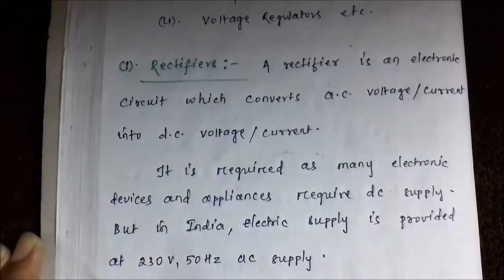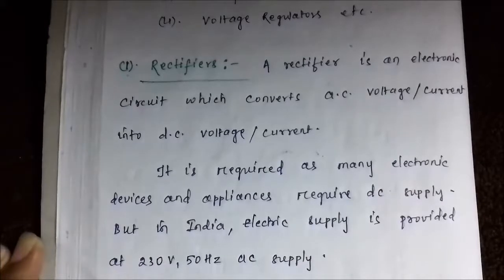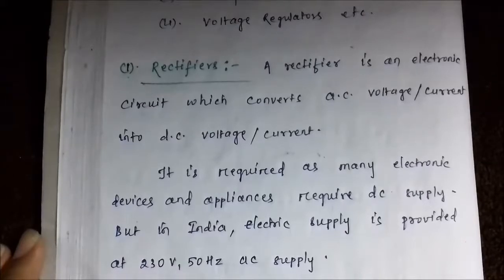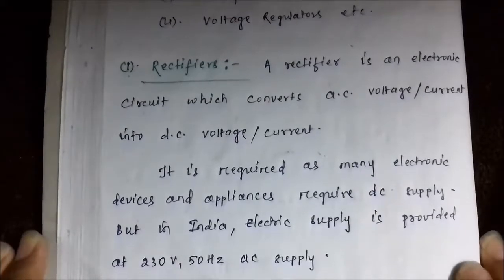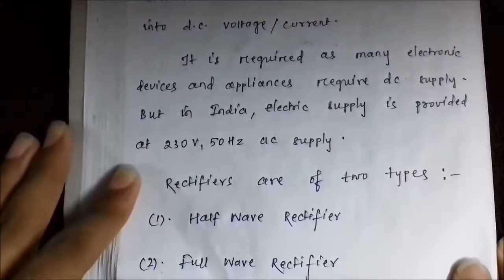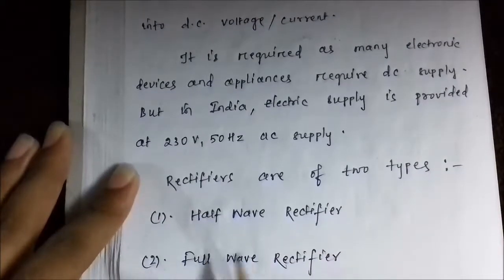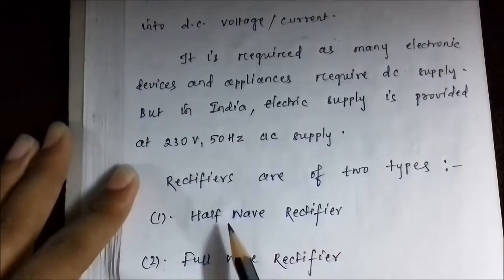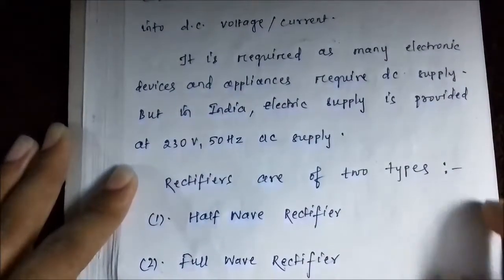230 volts and 50 hertz are the basic parameters of AC supply in India. So in order for the safe and sound operation of the various appliances and devices in our house, we need rectifiers to convert this power supply into DC form, which is then fed to these devices. Almost all of these devices have inbuilt rectifier circuits. There are generally two types of rectifiers primarily used in electronic circuits: half wave rectifier and full wave rectifier. Let us first discuss the half wave rectifier.